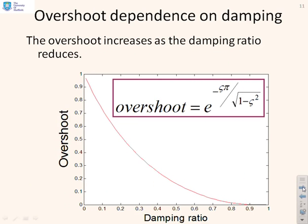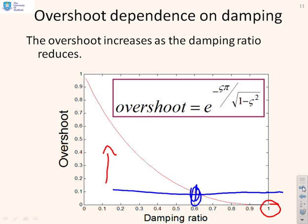A sketch shows how the overshoot changes as you change the damping ratio. If the damping ratio is 1 (critical damping), there is no overshoot. As the damping ratio decreases, the overshoot increases. If you can accept 10% overshoot, a damping ratio of about 0.6 or greater suffices. For very small overshoot, you might require damping of 0.8 or greater. As damping gets very small, the maximum overshoot approaches 100%.